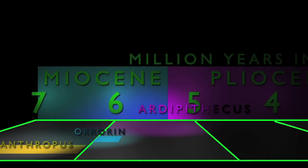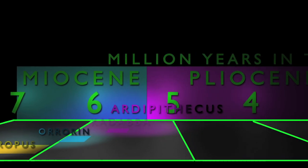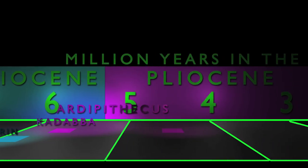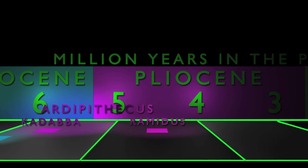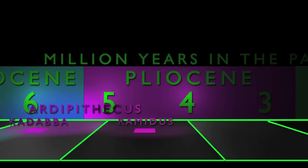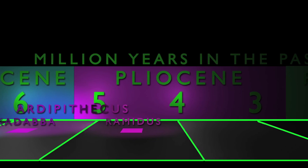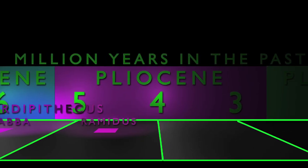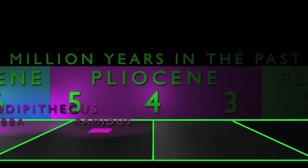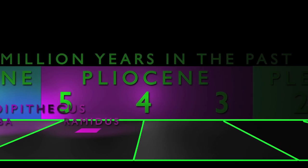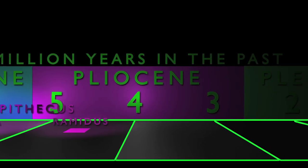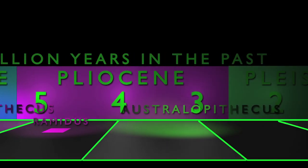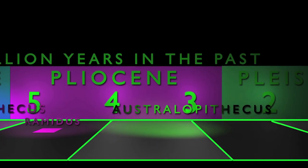As we move forward in time, we find Ardipithecus kadabba at around 5.6 million years in the past. At around 4.4 million years in the past, we find Ardipithecus ramidus. These members of the genus Ardipithecus occur after the genetic split between the lineages of Homo and chimpanzee. What role Ardipithecus plays on the family tree Homo is still being researched. Moving forward to around 4 million years in the past, we come to the genus Australopithecus.